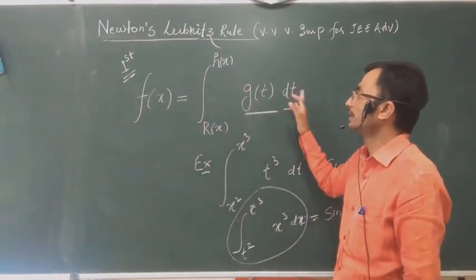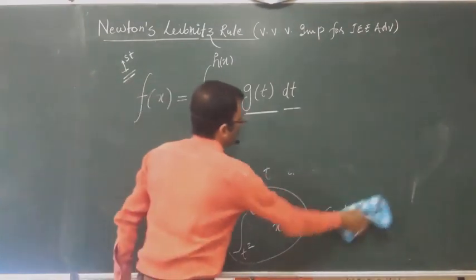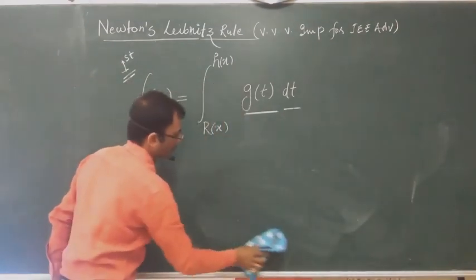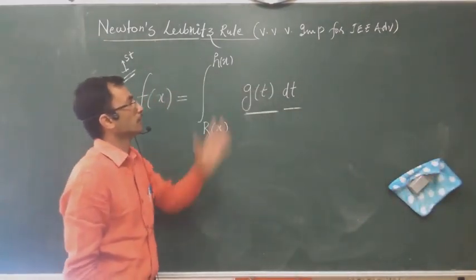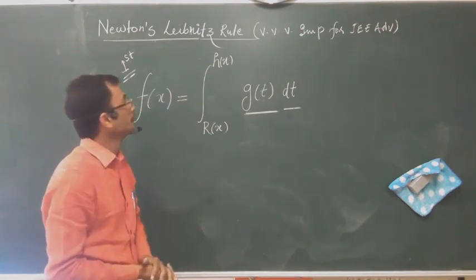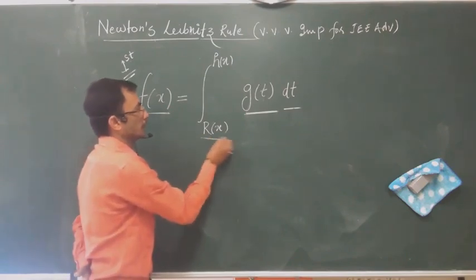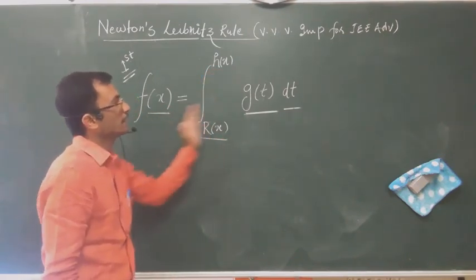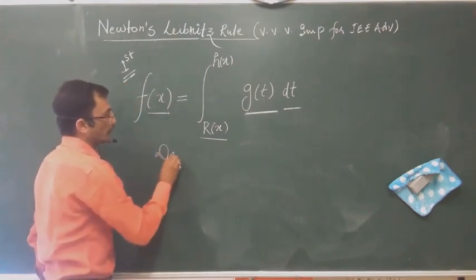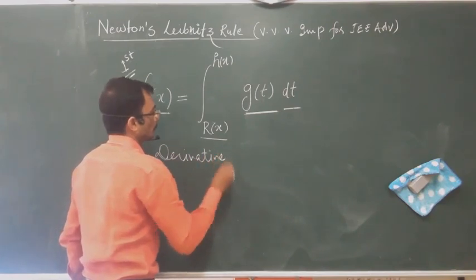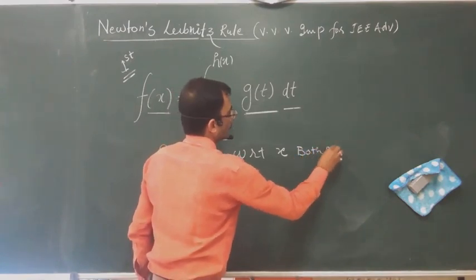Sometimes you have x as the limit here, then you have another function, and here the function of x is equal to x. We will see how to solve it. What is the basic step? So if we want to remove this limit, we will differentiate both sides — we will use derivative with respect to x on both sides.